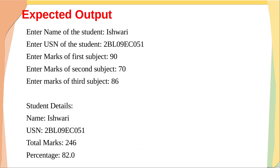Let us see the expected output. Once the program is executed, it should ask us to enter the name of the student, then the USN, then the marks of three subjects. After entering those, it should calculate total marks and percentage, and finally display the student details — name, USN, total marks, and percentage. We can also display the marks of all three subjects.